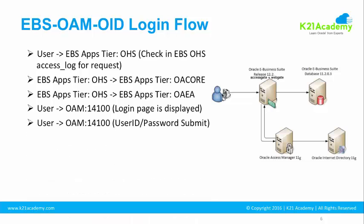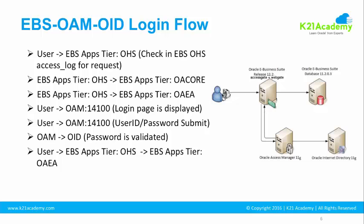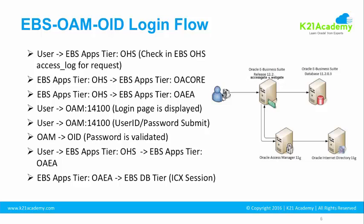On the OAM login page the user types their user ID and password and hits submit, which sends credentials to Oracle Access Manager. We'll see that in the HTTP header and in the browser. OAM then sends the request to OID for validation. If you get an error on submit, look at Oracle Access Manager and OID logs. Once successfully authenticated from OID, the request is sent back to the EBS Access Gate, which takes the user ID and GUID to the EBS database. If a matching GUID or UID is found, an ICX session is created and the user reaches the landing page.